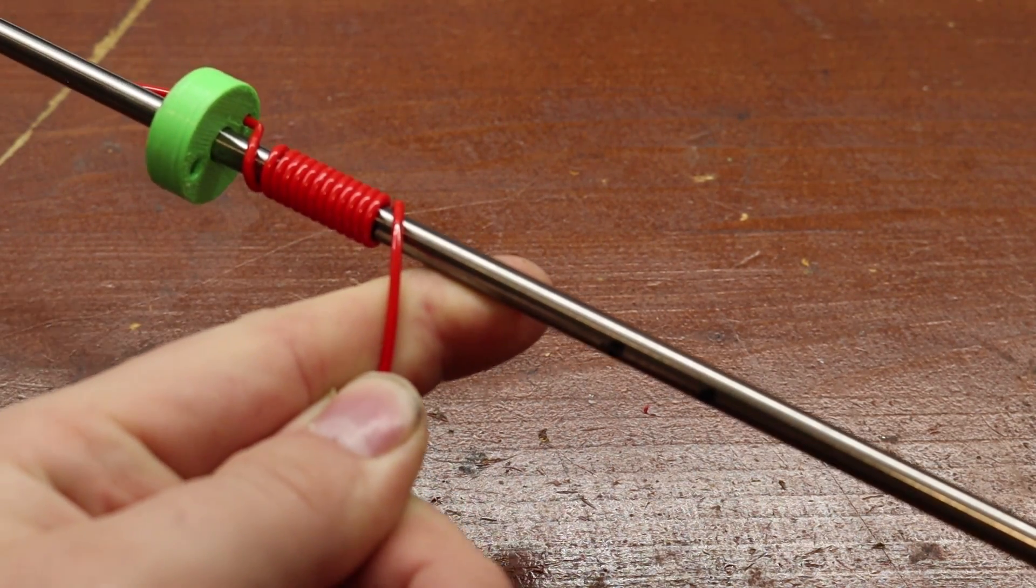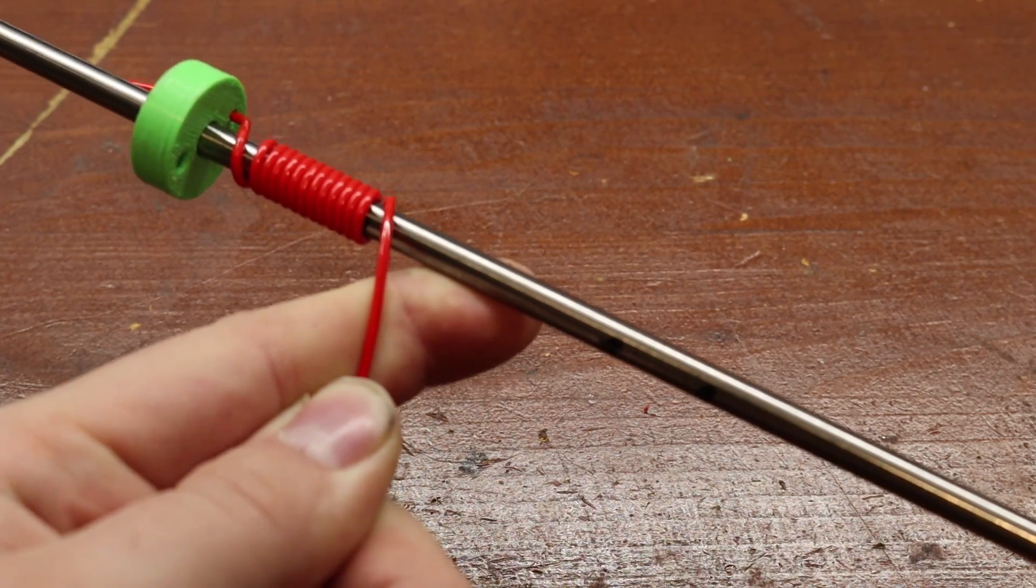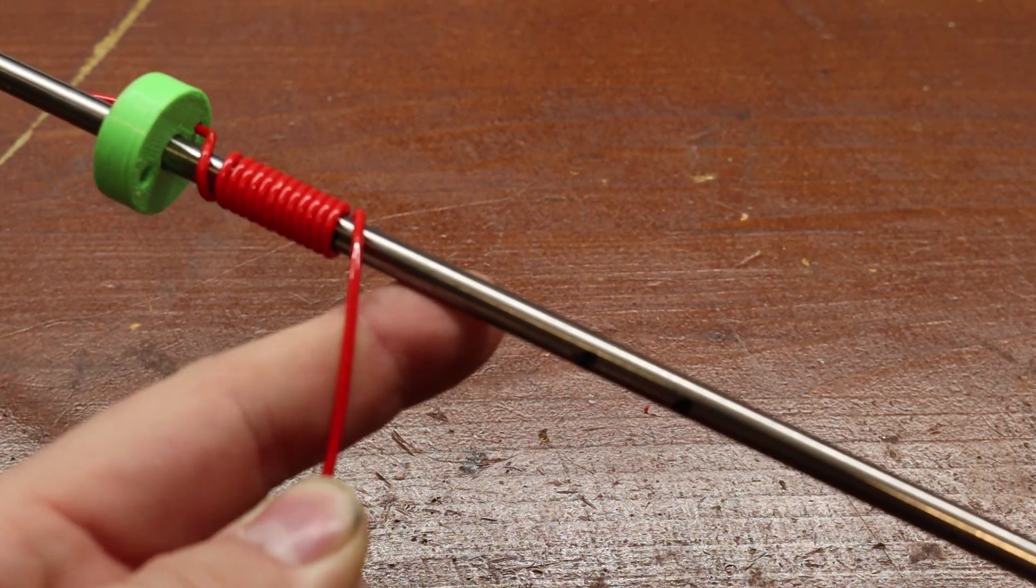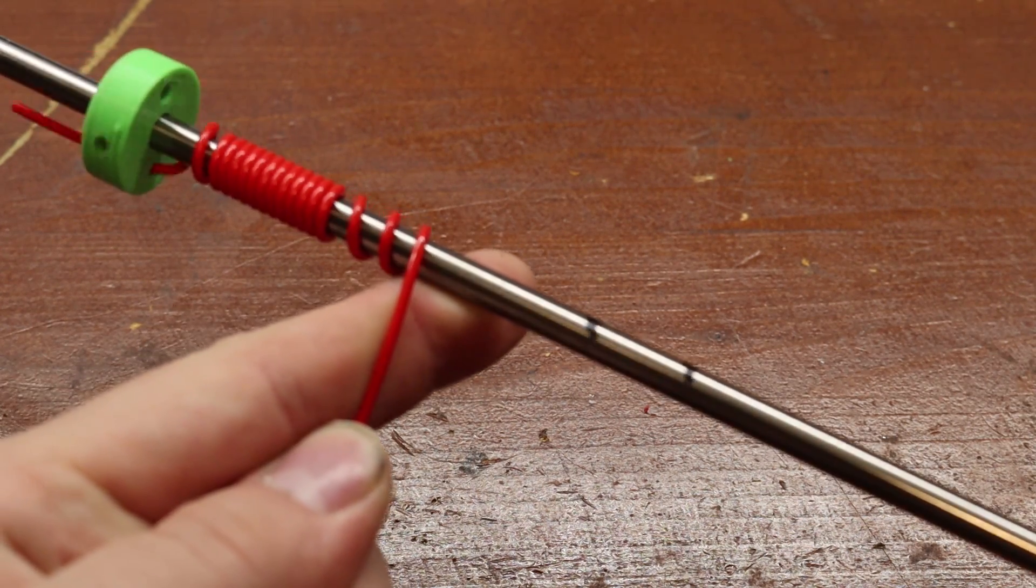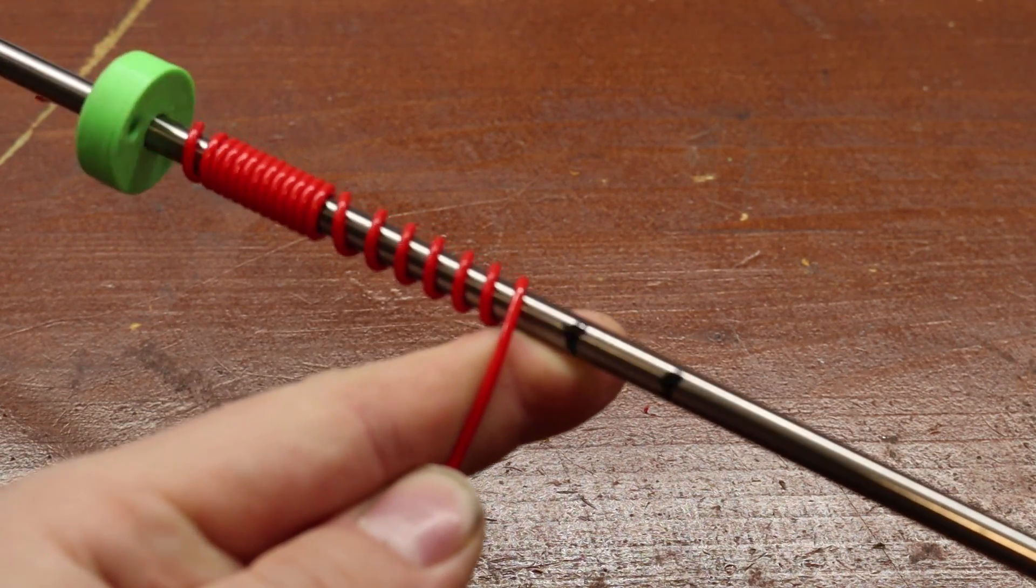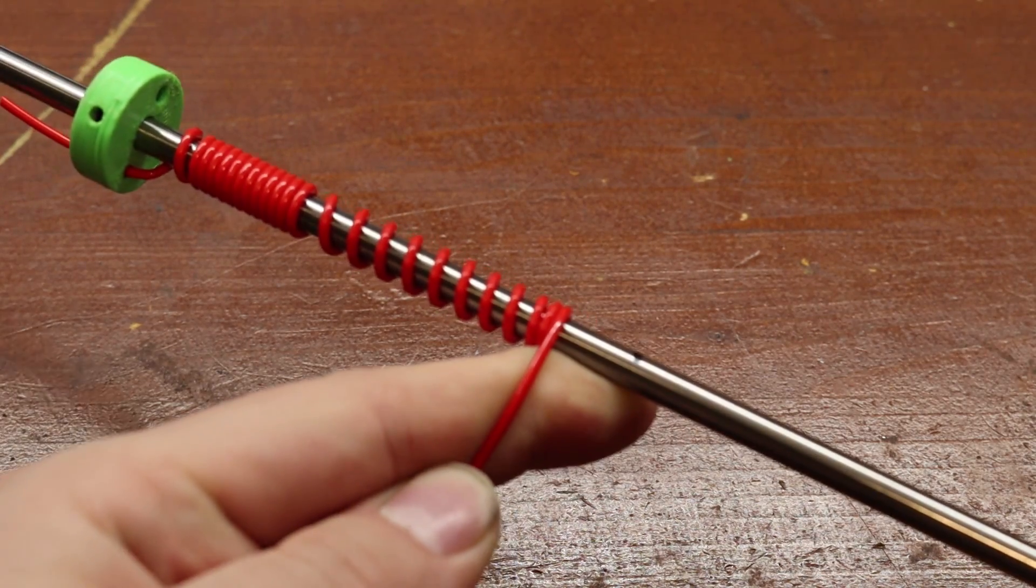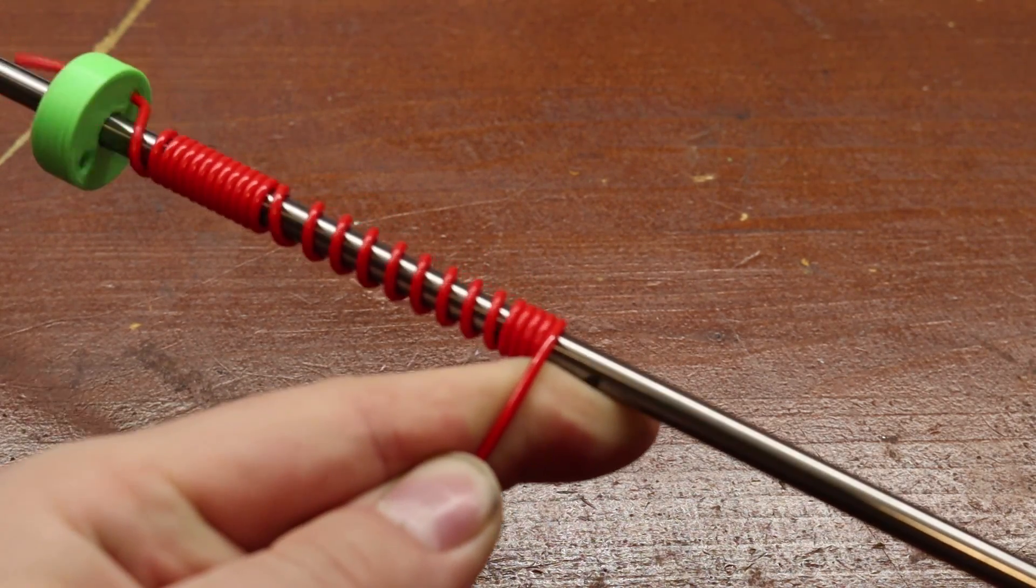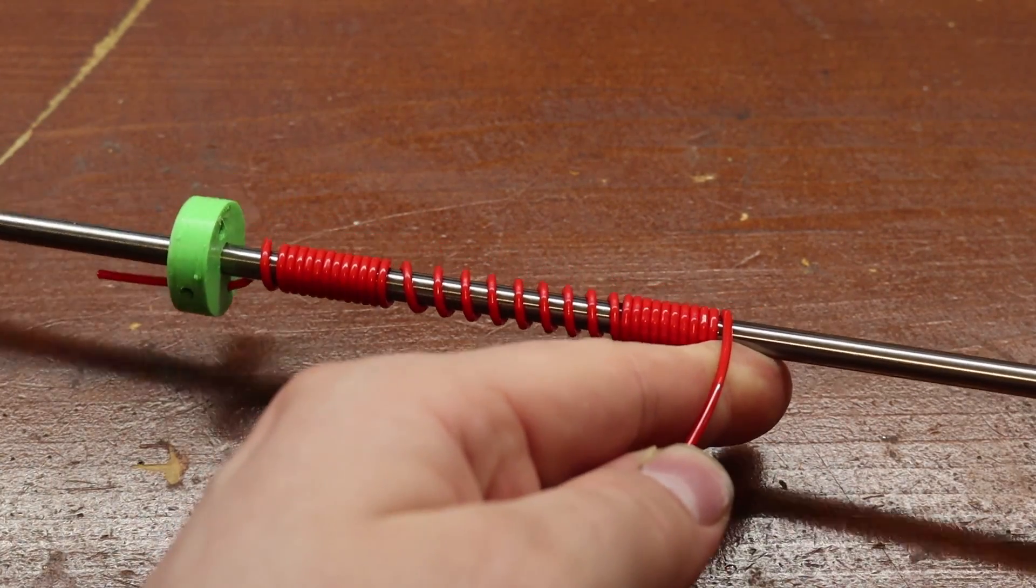From this point the helix angle can be determined, in essence how many windings will fit in a certain length. The more windings, the weaker the spring. The winding of the helix can actually be quite tricky but with some practice you will manage. Then from the third mark you need to bring the spacing between the windings back to zero and continue this up to the fourth mark.